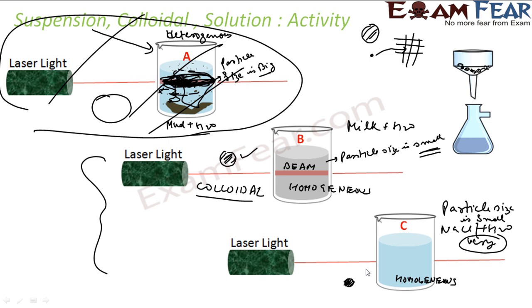So we have now produced all three kinds of mixtures: colloidal, suspension, and solution. Milk and water is a colloidal mixture, common salt and water is a solution, and mud and water is a suspension. You can pause this video and try out this experiment at home to get a feel for these kinds of homogeneous and heterogeneous mixtures before continuing the chapter.